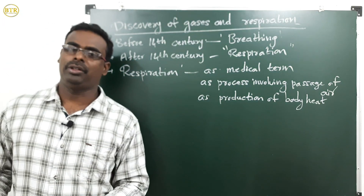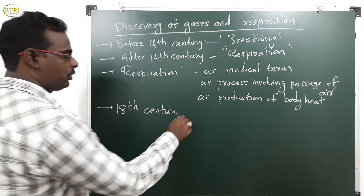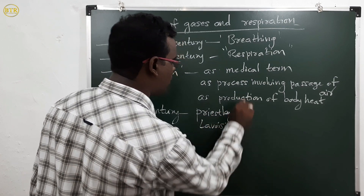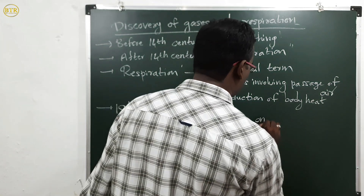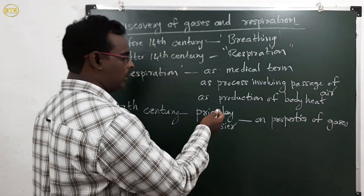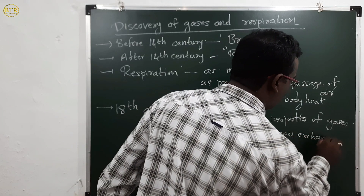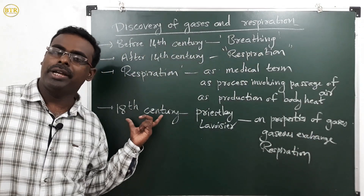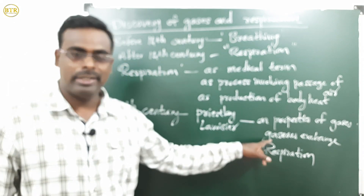In the 18th century, two scientists — Priestley and Lavoisier — did experiments on properties of gases, gaseous exchange, and the respiration process. By these experiments, people came to know how gases are exchanged in our body.